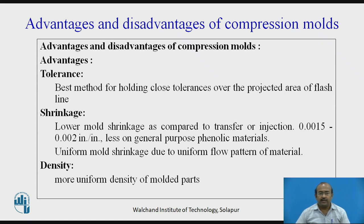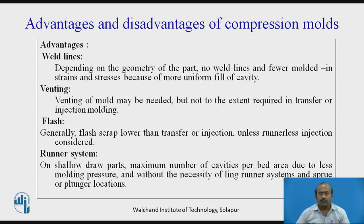Advantages and disadvantages of compression molds from a technical perspective: Tolerance — best method for holding close tolerance over the projected area of the flash line. Shrinkage — lower mold shrinkage compared to transfer or injection molding, 0.0015 to 0.002 inch per inch, less on general-purpose phenolic materials, and uniform mold shrinkage due to uniform flow pattern. Density — more uniform density of the molded part. Weld lines — depending on part geometry, no weld lines and fewer molded-in stresses due to more uniform cavity fill. Venting may not be needed to the extent required in transfer or injection molding.